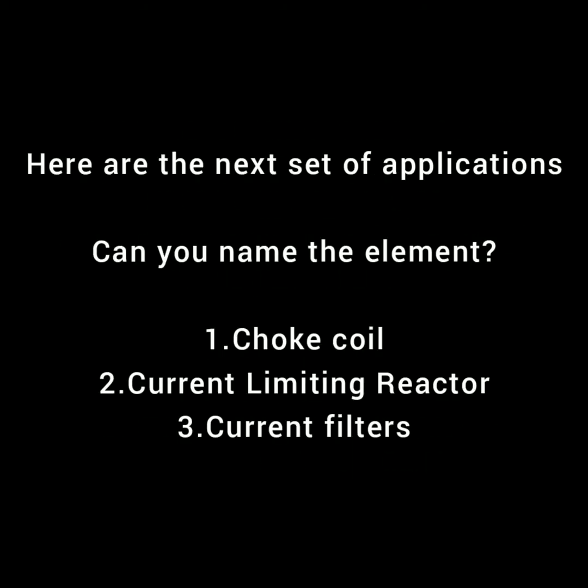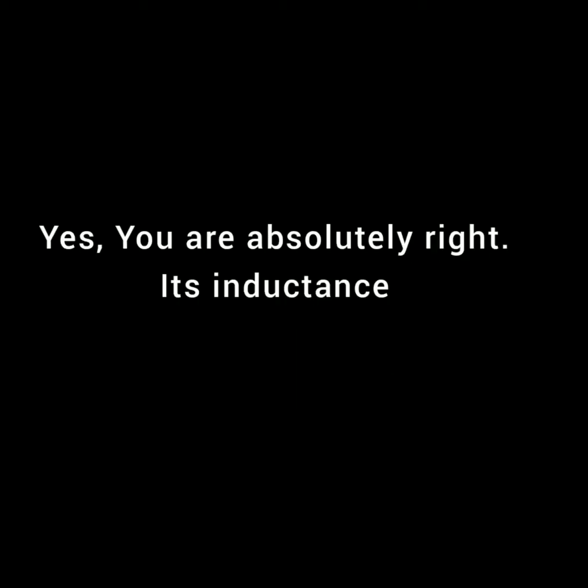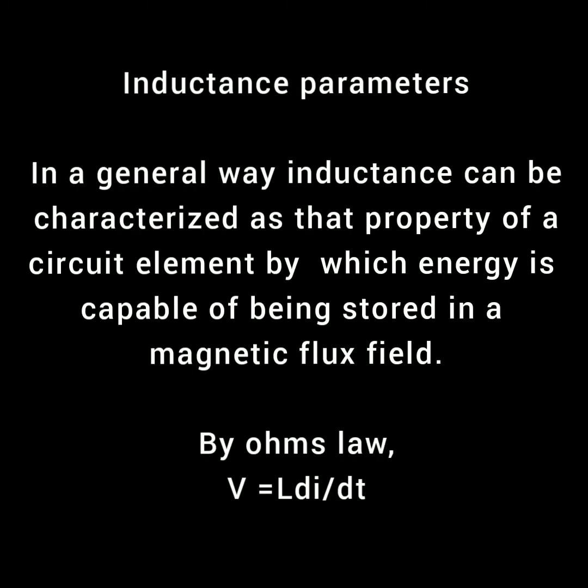Here are the next set of applications. Can you name the element? First is choke coil, second is current limiting reactor, third is current filters. The answer is inductance. A wire of suitable length, when twisted into a coil, becomes a basic inductor. If current is made to pass through an inductor, an electromagnetic field is formed. A change in the magnitude of the current changes the electromagnetic field — increase in current expands the field and decrease reduces it. The unit of inductance is Henry, denoted by H.